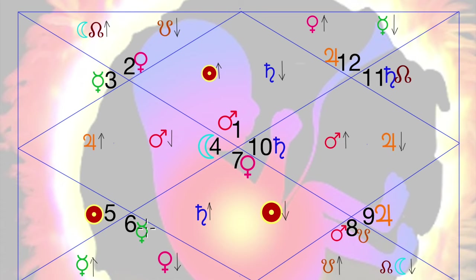Same way for Gemini, which is ruled by Mercury, sorry Virgo, which is ruled by Mercury here. An opposite sign Pisces, which is ruled by Jupiter over there, this is ruled by Mercury. Mercury is exalted, Venus is debilitated. For Pisces, Venus is exalted, Mercury is debilitated.